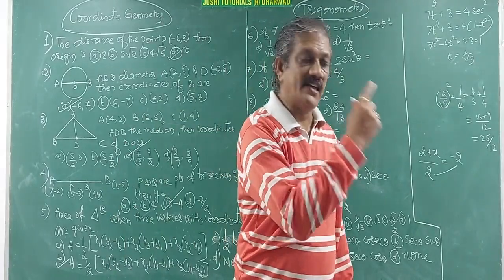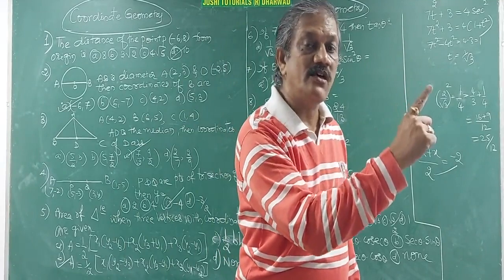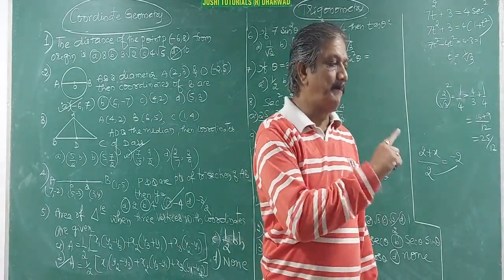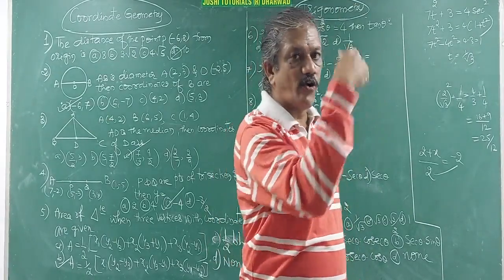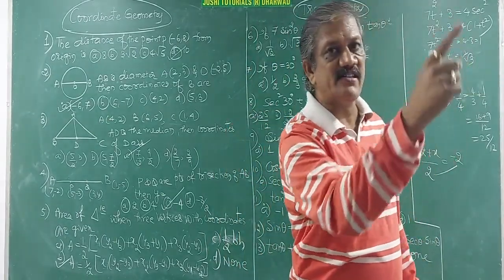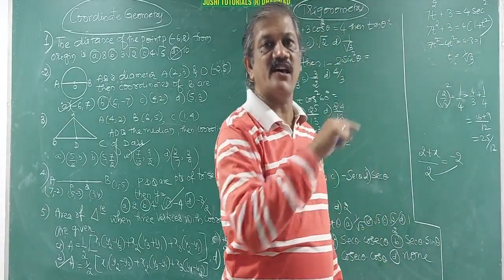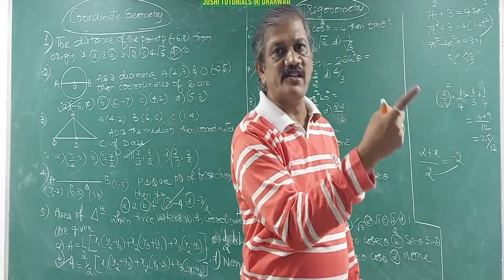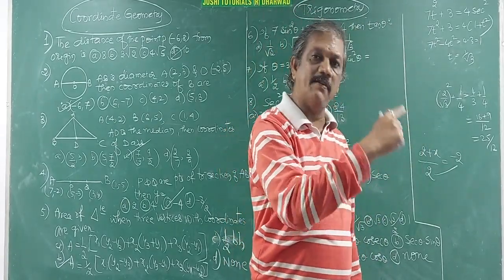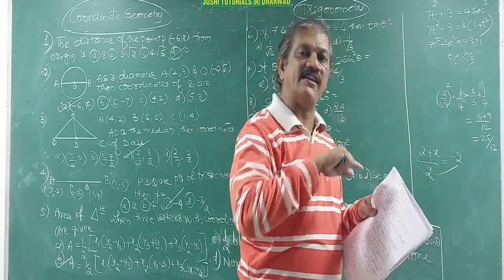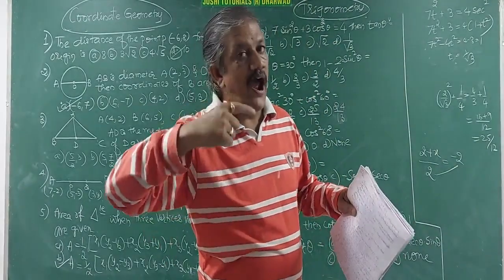Remember the Pythagorean identities: sin²θ + cos²θ = 1; 1 + tan²θ = sec²θ; 1 + cot²θ = cosec²θ. Then the complementary angle identities: sin(90°−θ) = cosθ, cos(90°−θ) = sinθ, sec(90°−θ) = cosecθ, cosec(90°−θ) = secθ, tan(90°−θ) = cotθ, cot(90°−θ) = tanθ.